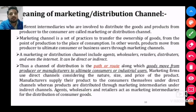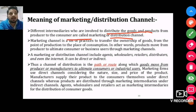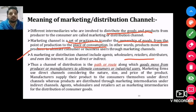The meaning of marketing and distribution channels: there are many intermediaries in the market to distribute goods and products from producer to consumer — these are called distribution channels or marketing channels. A marketing channel is a set of practices that transfers ownership of goods from the point of production to the place of consumption, i.e., into the hands of customers. These can be agents, wholesalers, retailers, distributors, and even the internet — both direct and indirect.